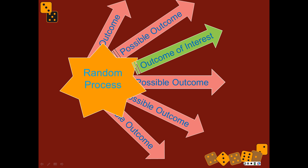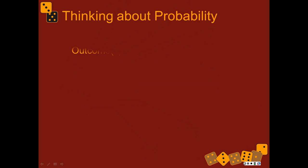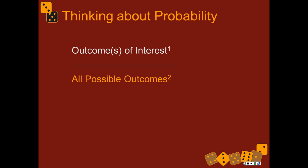So probability is always the number of ways that our outcomes of interest could occur — like rolling a 3 — divided by all of the ways all of the outcomes might happen. So it's a part divided by a whole, and that always gives you a proportion.